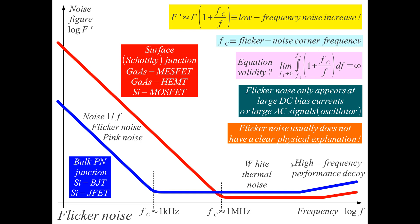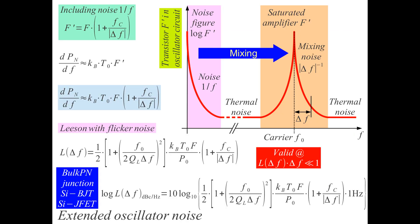Besides the flicker noise increase at low frequencies, we also have high-frequency performance decay: the gain goes down, conventional thermal noise goes up, so at high frequencies there is a small increase in noise, but not as large as the flicker noise increase at low frequencies. In oscillators we operate our device in saturation. Saturation means the device has a nonlinear function that performs mixing — this can be called third-order mixing or intermodulation distortion.